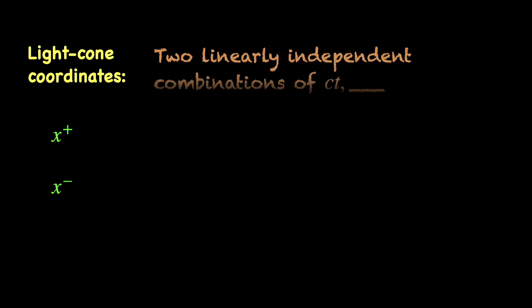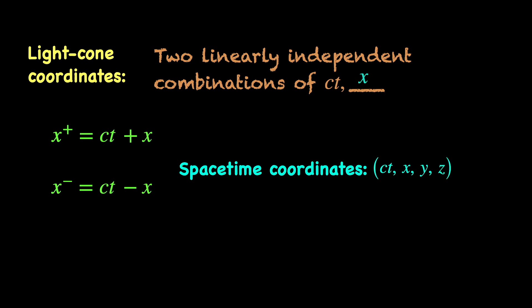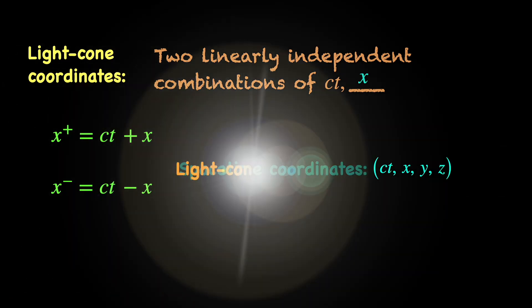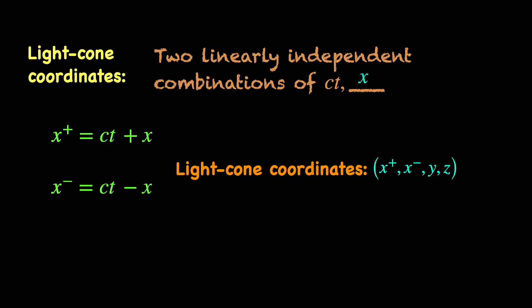The light cone coordinates, usually denoted by x plus and x minus, are two linearly independent combinations of the time coordinate ct and one of the three space coordinates in their Cartesian form, that is one among x, y, and z. If the observed motion is along the x direction, as is the convention we mostly use, the two light cone coordinates will be made of ct and x. So the spacetime coordinates ct, x, y, z of an event p will be traded in for x minus, x plus, y, and z, the corresponding light cone coordinates. The two spatial coordinates y and z just go along for the ride.